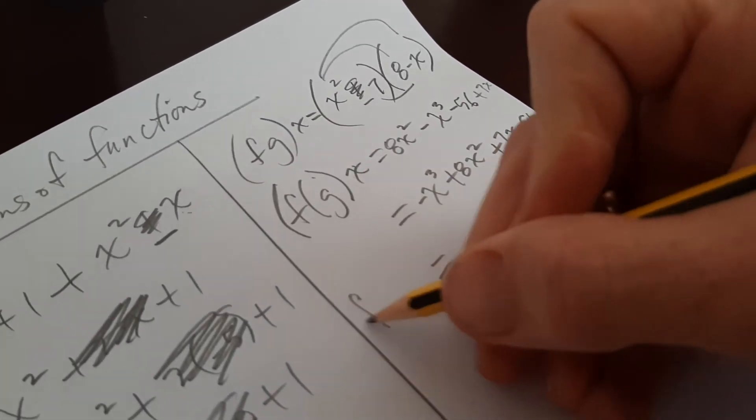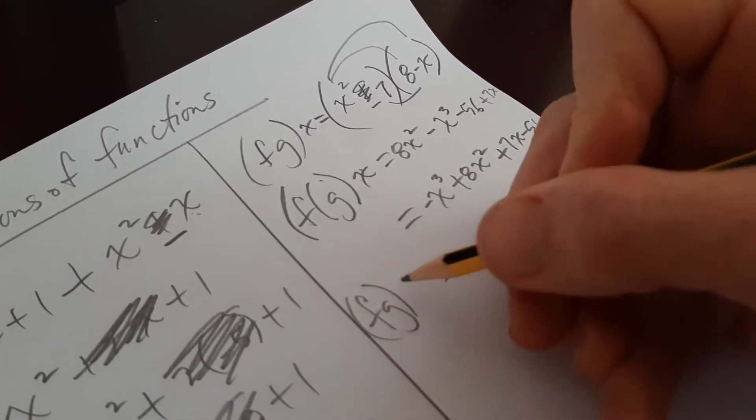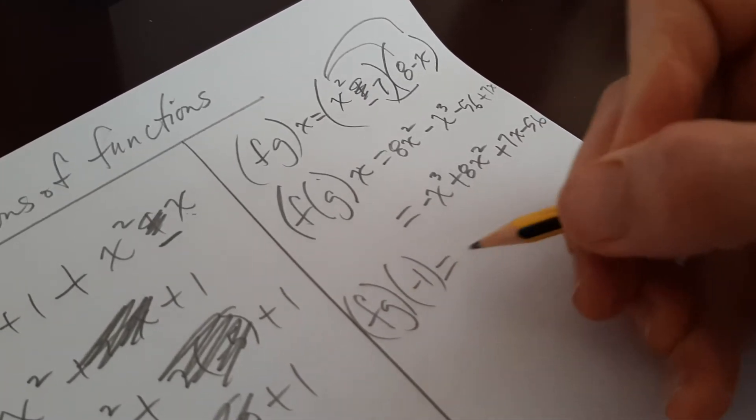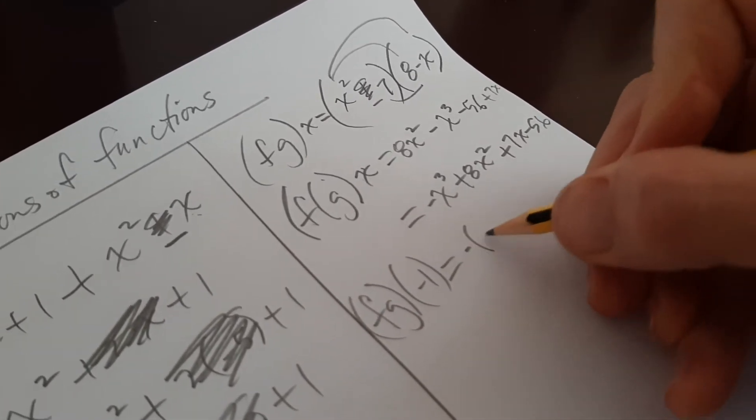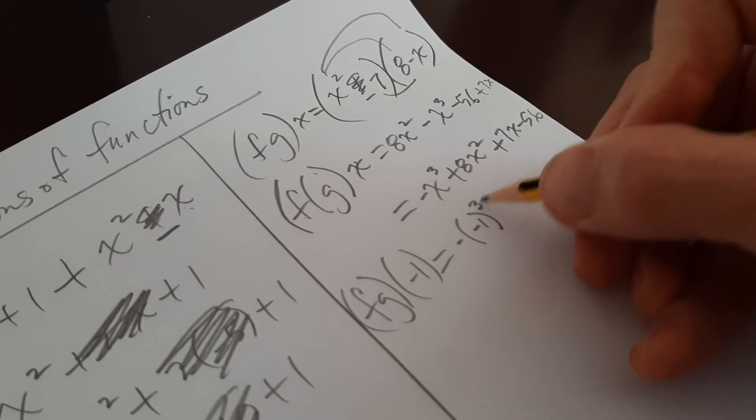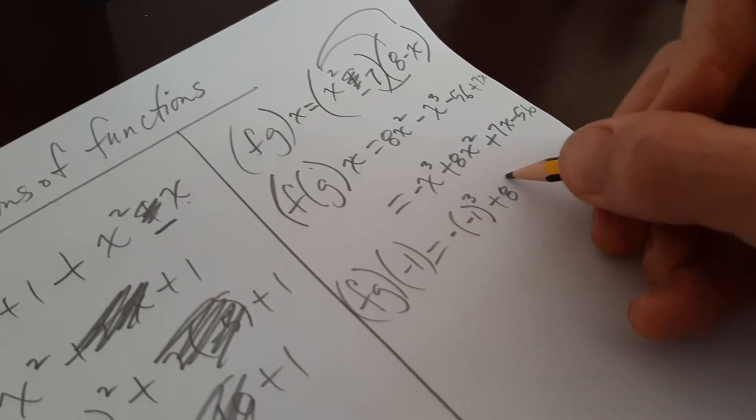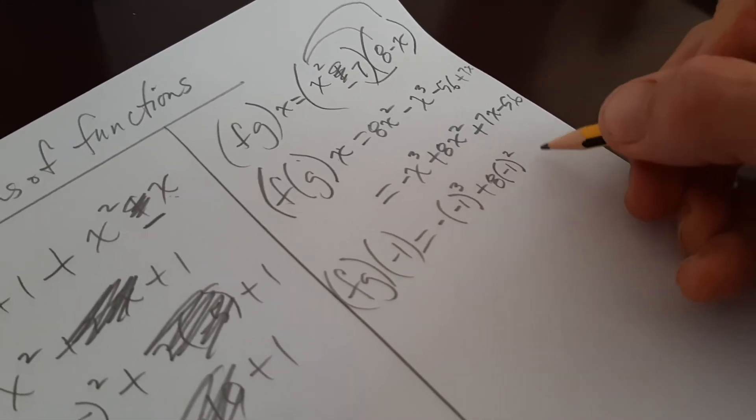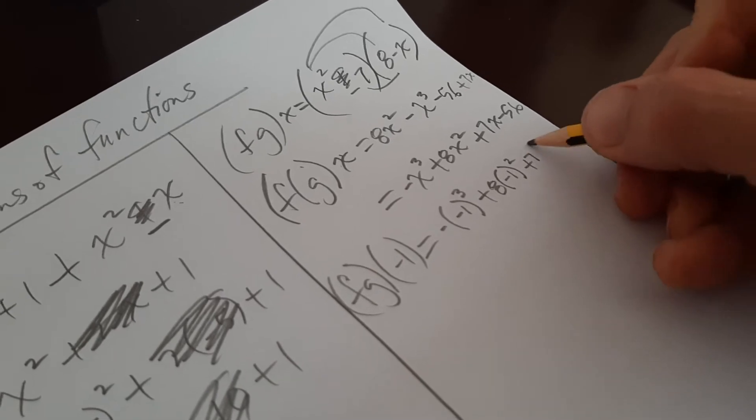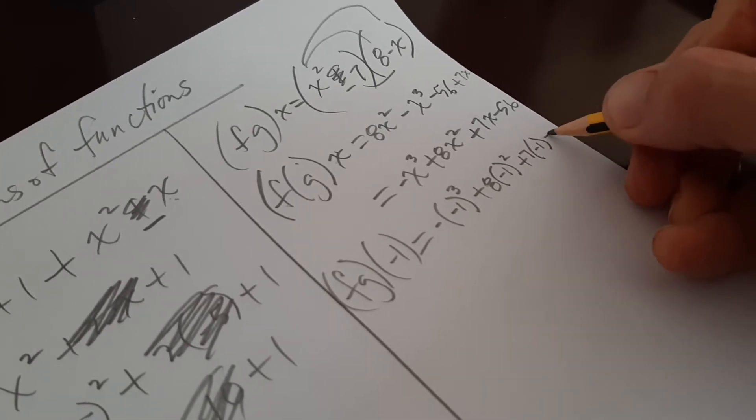So minus x cubed plus 8x squared plus 7x minus 56. Now I'm going to substitute in. So fg of minus 1, substitute that in, minus a minus 1 cube plus 8 times minus 1 squared plus 7 times minus 1 minus 56.